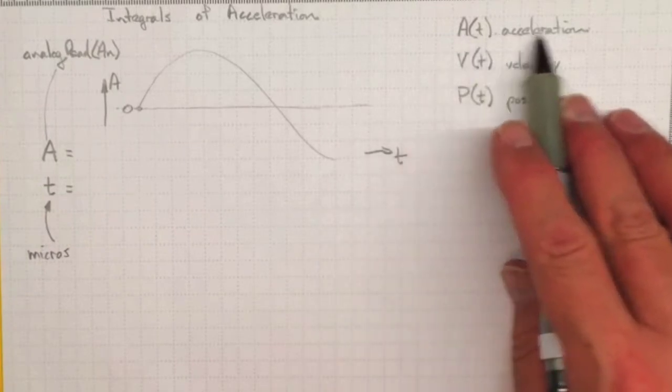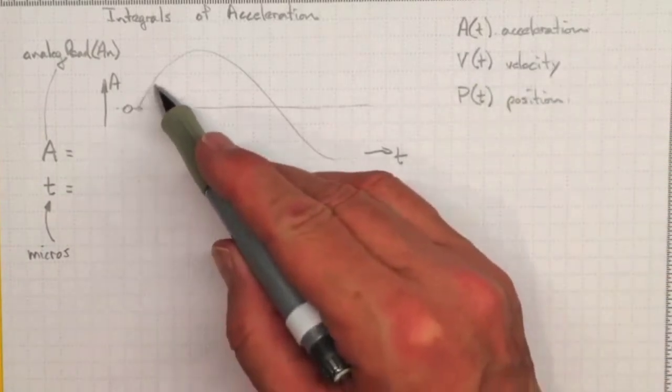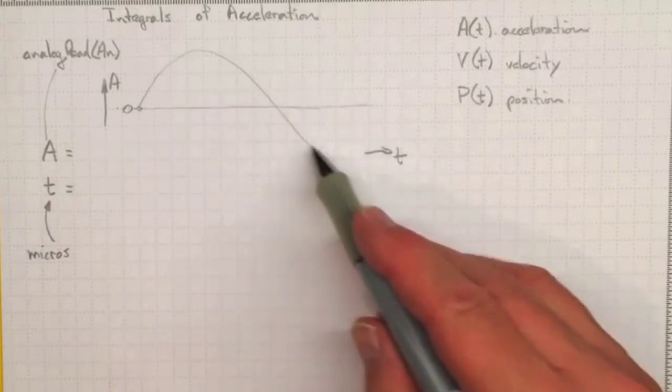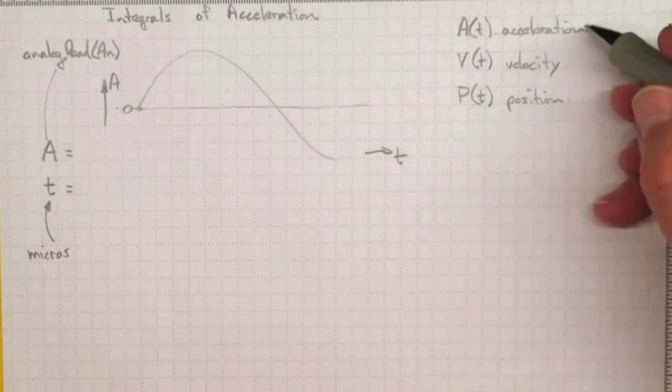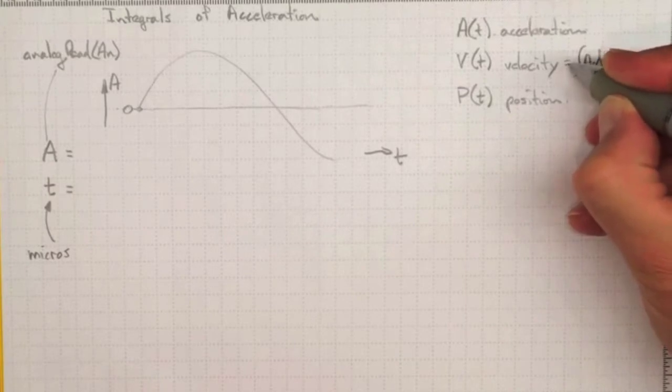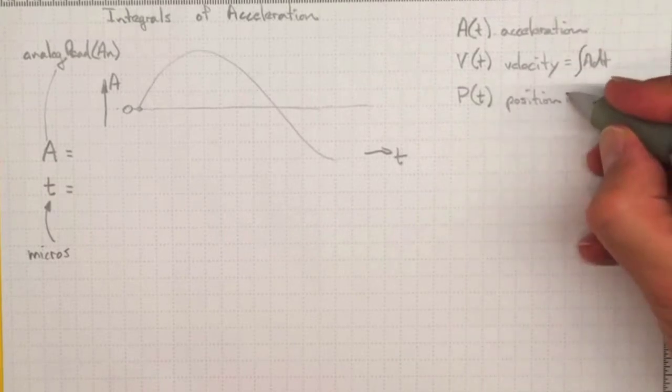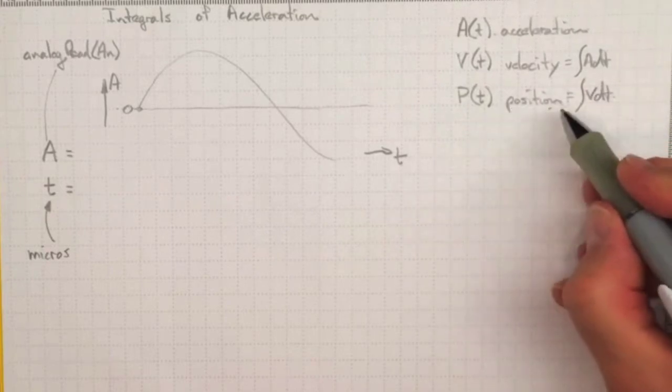On the other hand we might know the acceleration of the thing that we're trying to track. For instance, if the acceleration with time followed a function like this and we knew the analytic function, we could integrate the acceleration over time to get the velocity and we could integrate the velocity over time to get the position.